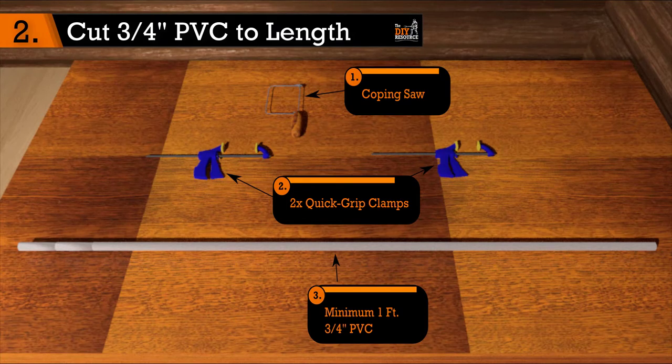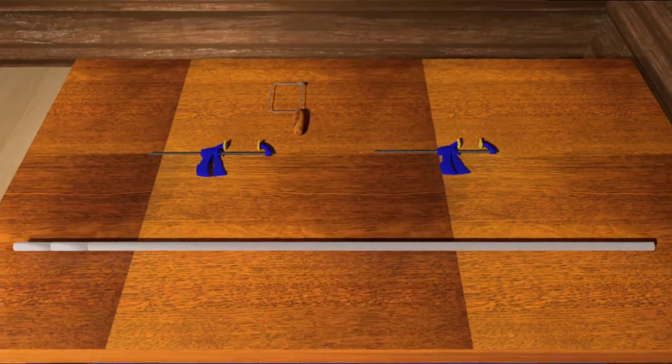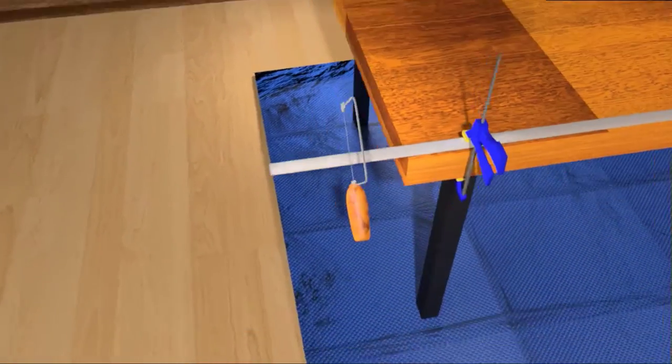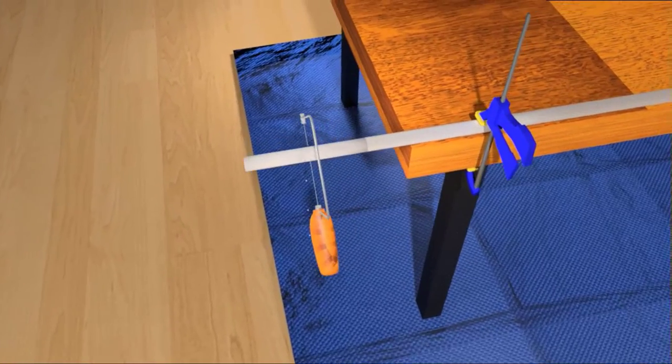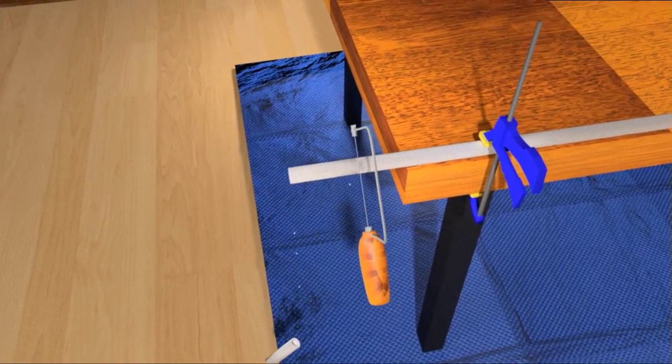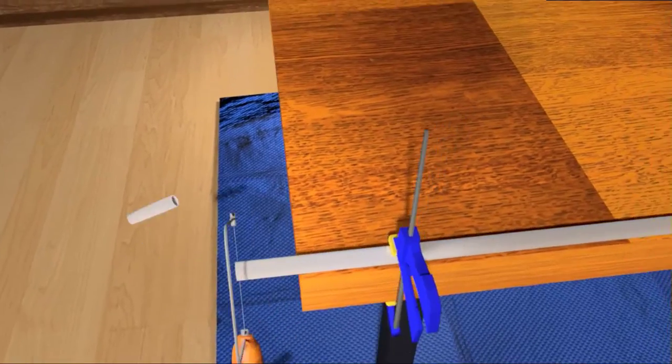Step 2. Cut 3 quarter inch PVC to length. Repeat step 1 for your 3 quarter inch PVC, but instead of measuring out a 6 foot length to cut, measure out two 4 1/2 inch sections. You want to clamp the PVC to your bench and then proceed to cut through with your coping saw. You should end up with two 4 1/2 inch sections of PVC. This will serve as the handles to your PVC workout bar.